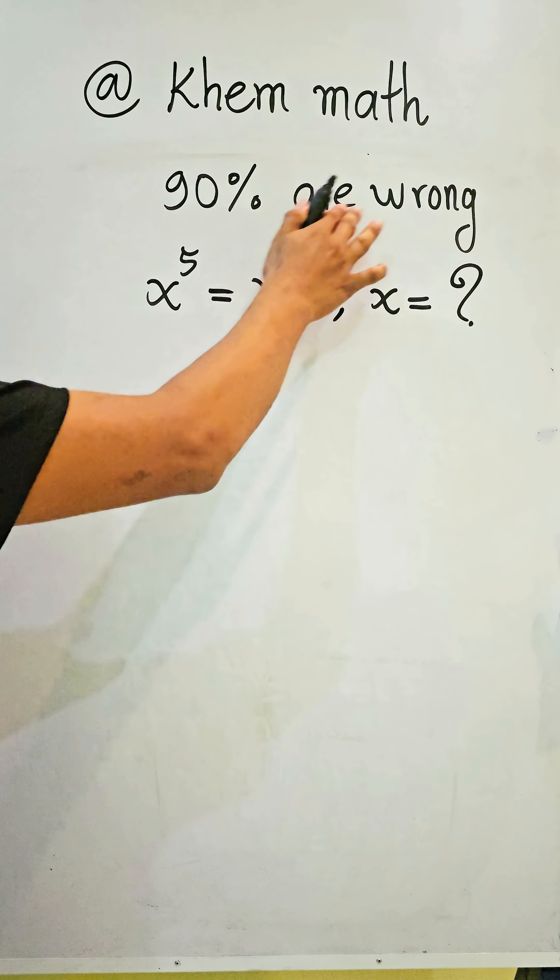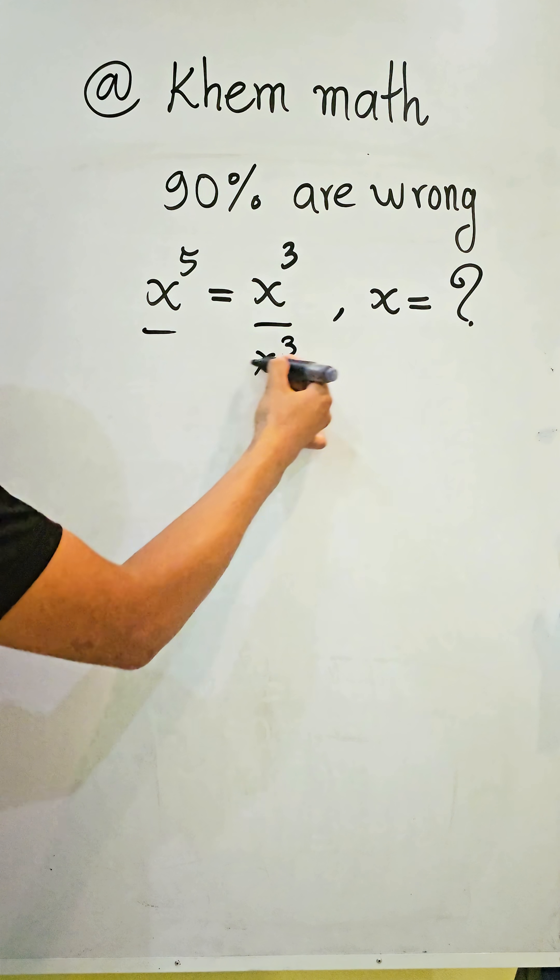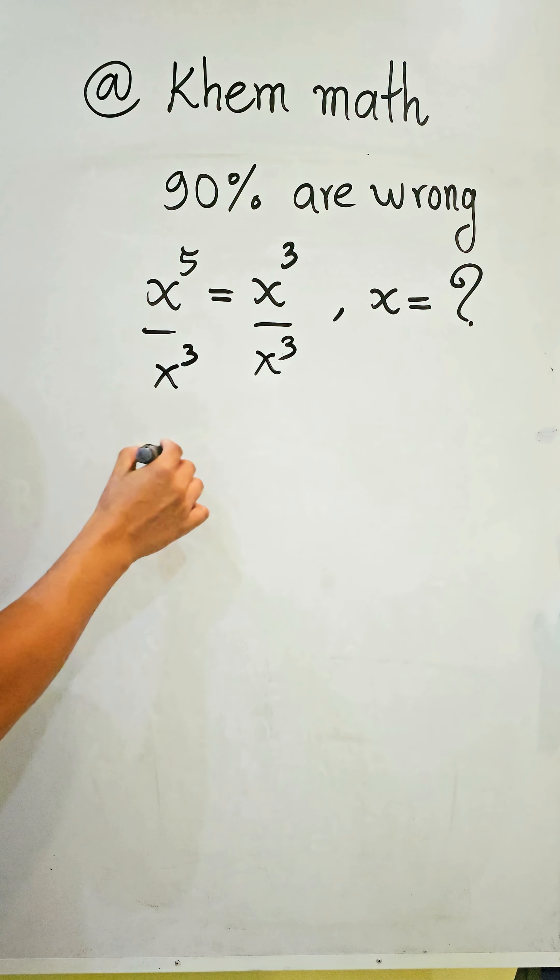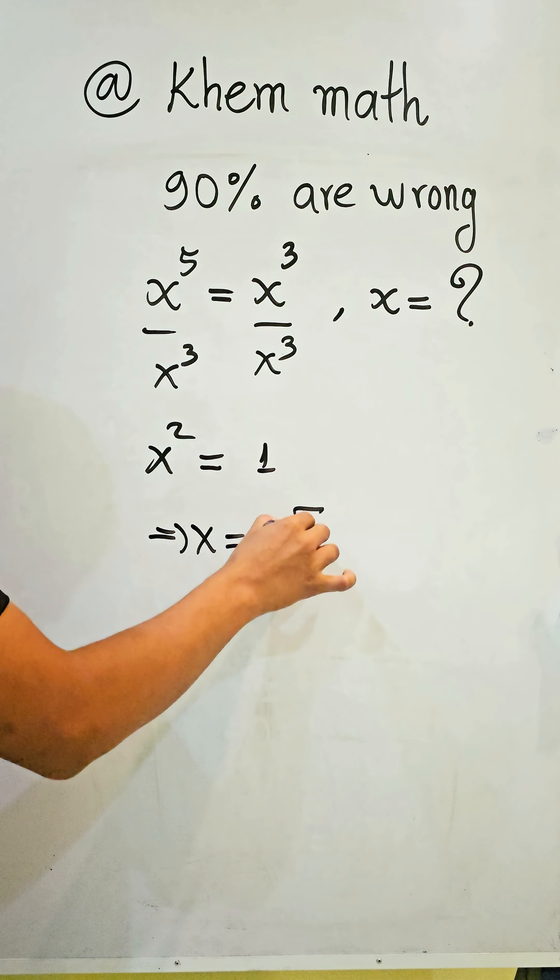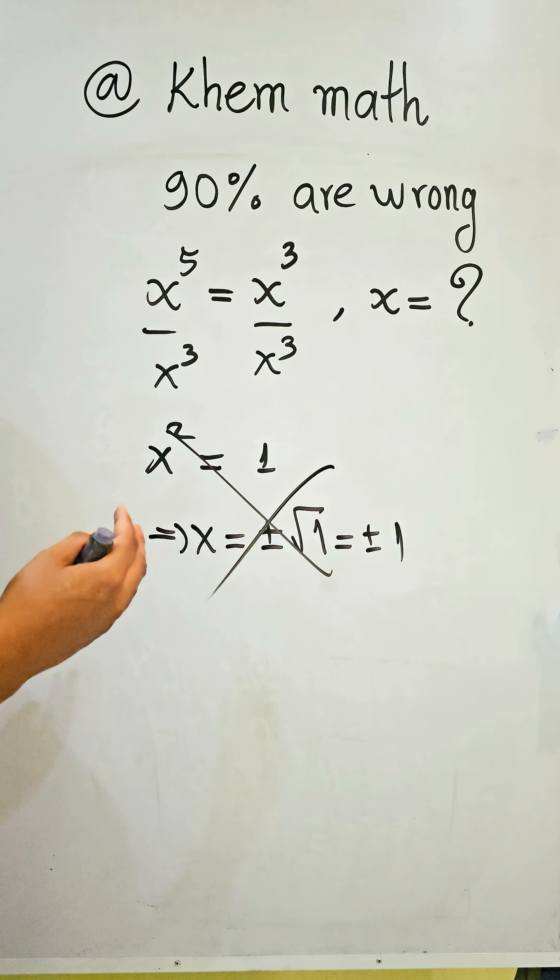Most, 90 percent, are wrong. Many people divide both sides of this equation by x^3 and get x^2 equals 1, and then x equals plus or minus the square root of 1, which equals plus or minus 1. If you do this, it's wrong.